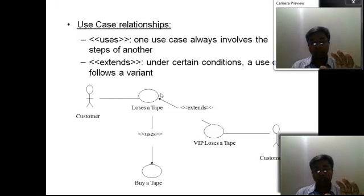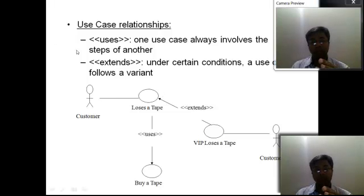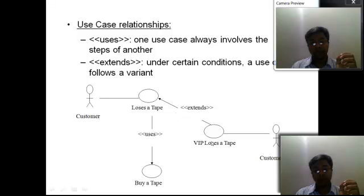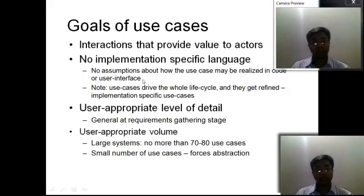One type of relationship is 'uses' — for example, a customer checks email is the use case, but in order to check email you have to log in, so 'login' is in the 'uses' category of relationship. The other type is 'extends', which represents an option. For example, a customer rents a tape, but a VIP renting a tape is an option — it's an extension. However, to rent a tape you must first buy a tape, so the extended relationship is optional.